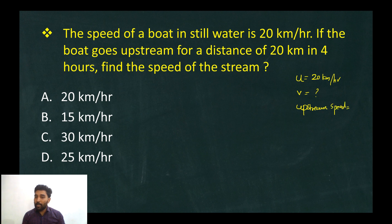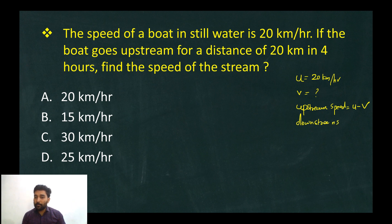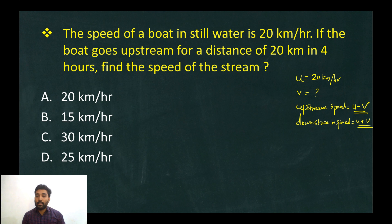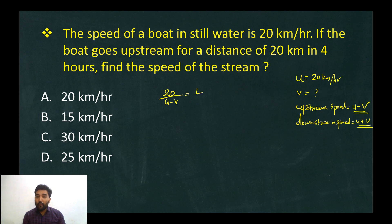U minus V is the upstream speed; we will use that. The downstream speed is U plus V. For the upstream direction, the effective speed is U minus V. So: 20 divided by the upstream speed U minus V is equal to 4 hours.